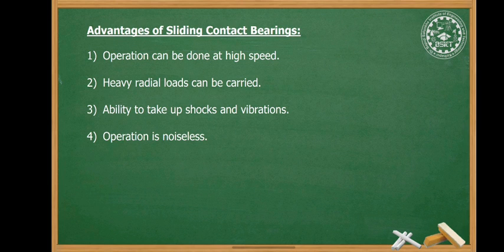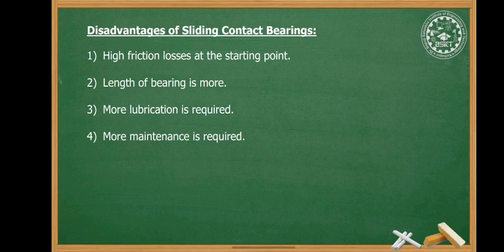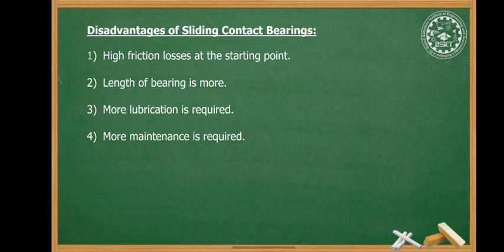Here are some advantages of sliding contact bearings: operation can be done at high speed, heavy radial loads can be carried, ability to take up shocks and vibrations, and operation is noiseless. Disadvantages include high frictional losses at the starting point, as the bearing surface and shaft are in contact due to self-weight generating friction. The length of the bearing is more, more lubrication is required, and more maintenance is also required.